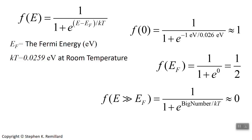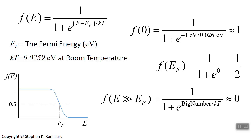So we have these limiting values at large and small energies, and at the Fermi energy. You could put it into your graphing calculator using a made-up value of 1 electron volt for the Fermi energy, and you find that it looks kind of like a step function, but rounded. The important thing is that it passes through a value of 1 half at the Fermi energy. When the energy is larger than the Fermi energy, there isn't much function left — it goes to 0 fairly quickly. At low energy, it's just 1 throughout the whole low energy region, and you have to get close to the Fermi energy for the exponential in the denominator to start to have an impact on the value of the function.